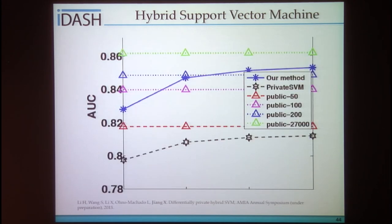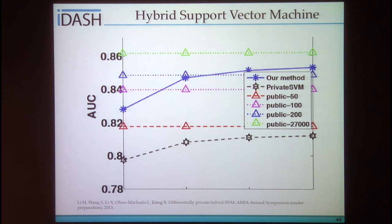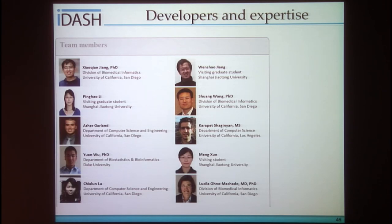Most recently, we also extended this idea to a hybrid differential private support vector machine. The paper has not yet been published, but the basic idea is that if we have some publicly available data, we can select support vectors smartly so we do not spend our privacy budget blindly.